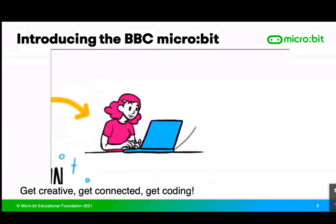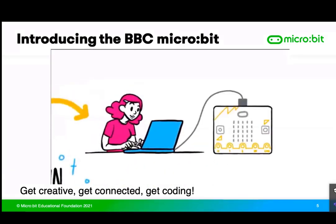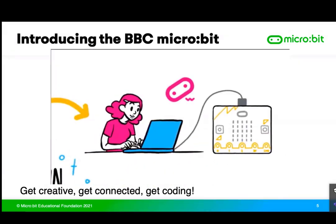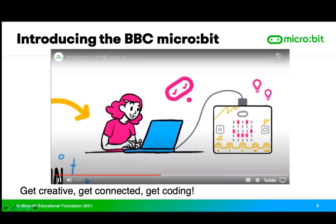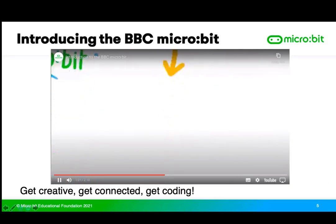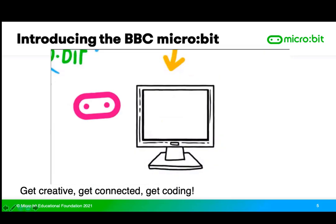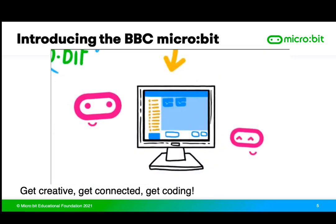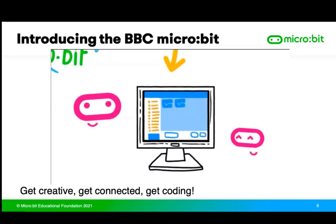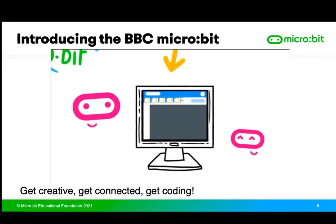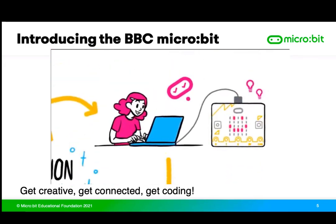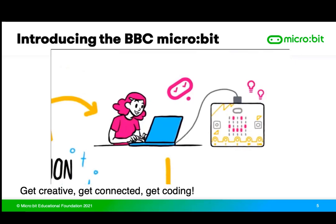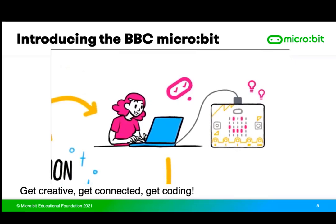The micro:bit can only do what you tell it to do, so the first thing you need to do is write a program. You can use different programming languages — for example, MakeCode, which works as a block and text editor, or the Python text-based editor. For beginners, MakeCode is a good place to start.